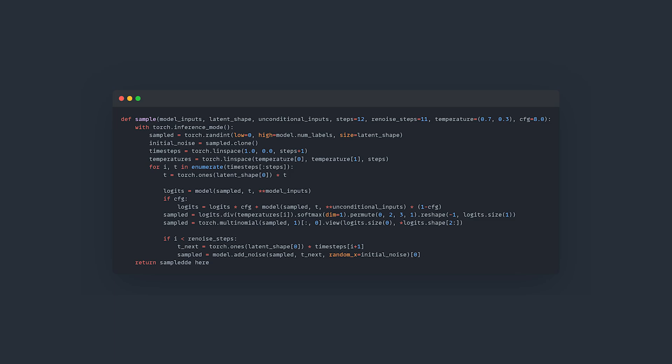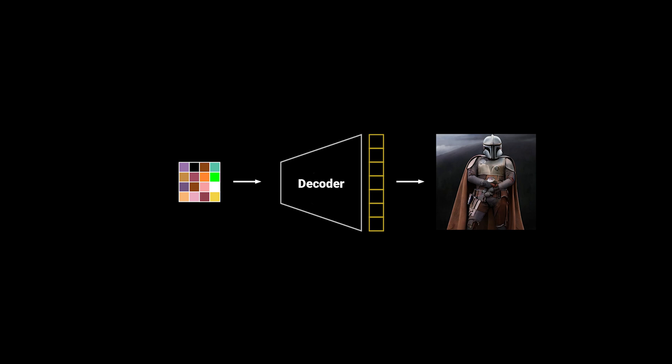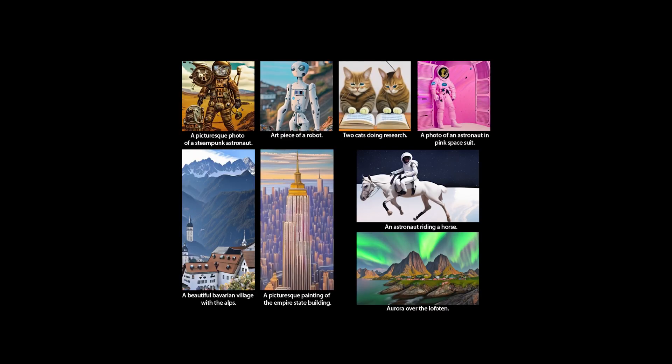The last thing we do is feed the latent tokens into the decoder of the VQGAN to get the real image at pixel level. With that we can sample these beautiful images. I think it's pretty cool that with such a simple setup for training and sampling you can get really aesthetic images. It really gives a nice and gentle introduction into the field of generative AI where you can understand it with little to no math background.